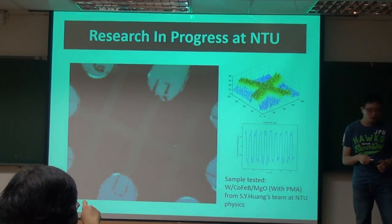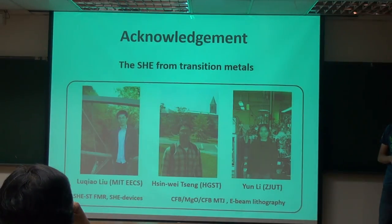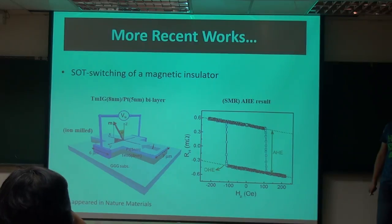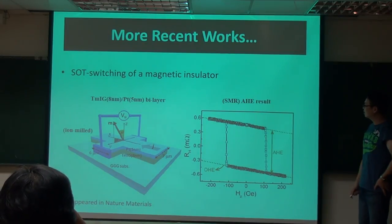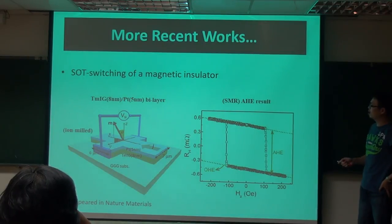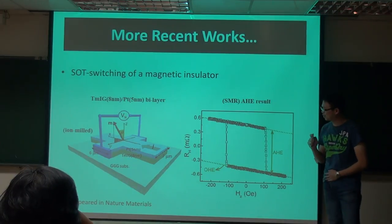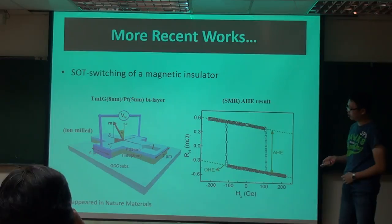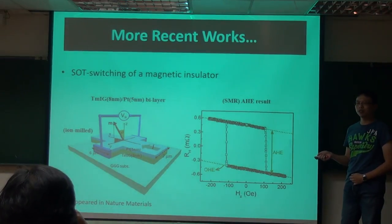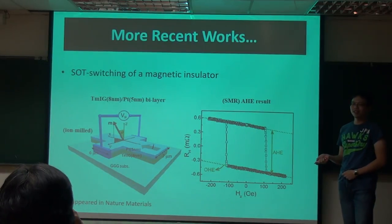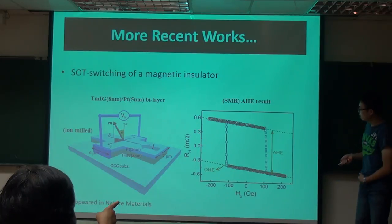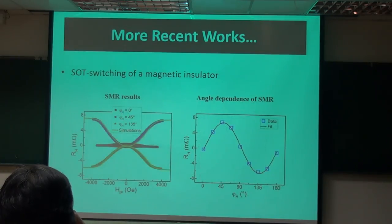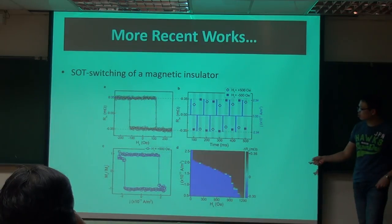Question about the latest result on the TMI garnet with PMA — do you see something particular in your transport measurements, any difference? Yes, we have PMA. I don't have experience with the in-plane garnet case. At Cornell they tried very hard to switch YIG using spin-Hall effect and couldn't do it. But now we can do it. This is the spin-Hall magnetoresistance on the TMI garnet, and this is the current switching using this.